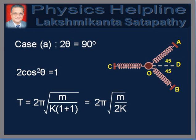When angle AOB is equal to 90 degrees, theta is equal to 45 degrees. Therefore, 2cos²theta equals 1, which gives T equal to 2π√(M / K(1 + 1)), which equals 2π√(M / 2K).